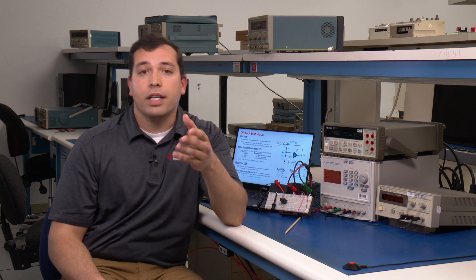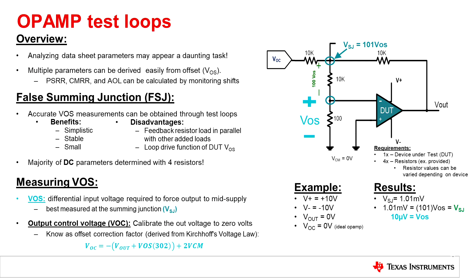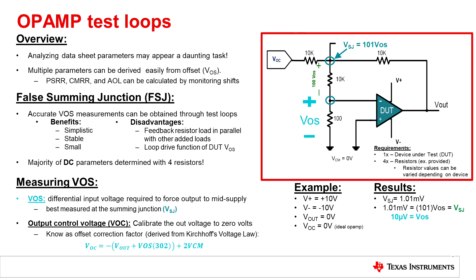There are various electrical parameters for a linear amplifier that are defined in the TI datasheet. To make testing these parameters more efficient, a test loop can be utilized. For this example, we will use the false summing junction. The false summing junction, as shown in the upper right-hand corner, helps to measure VOS.